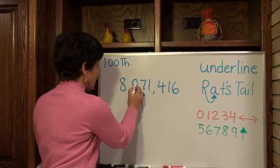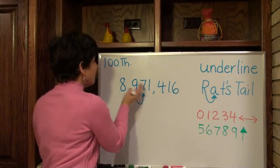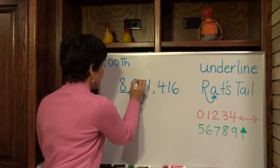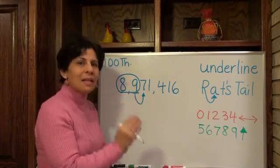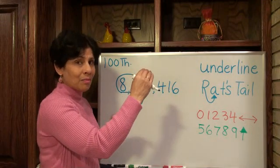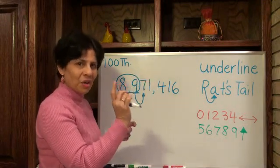You want to look at the 9, the underlying number, and then the number bigger than this, the bigger place value, as a whole number. Think of it as 89. 89 is going to go up and become what? 90. Okay?